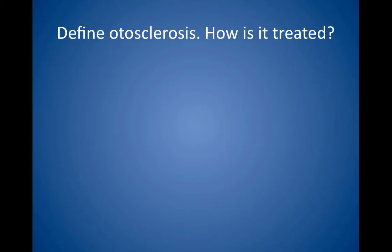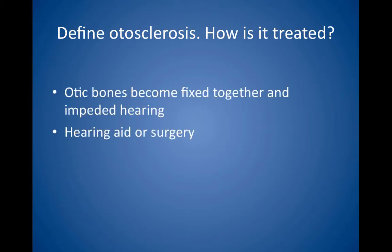Define otosclerosis. How is it treated? In otosclerosis, the otic bones become fixed together and impede hearing. It is the most common cause of progressive conductive hearing loss in adults, whereas presbyacusis is the most common cause of sensorineural hearing loss in adults. Treat with a hearing aid or surgery.